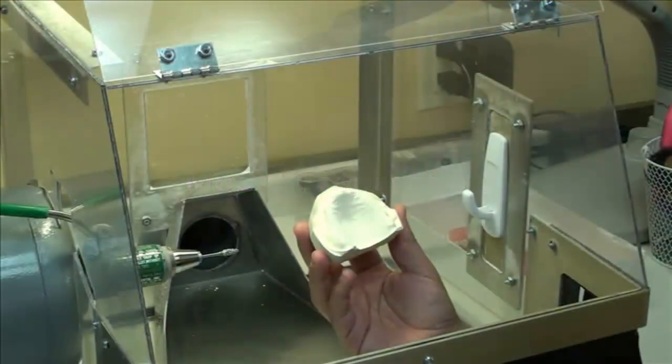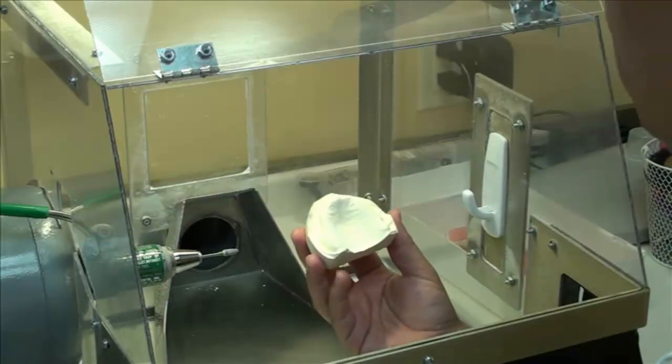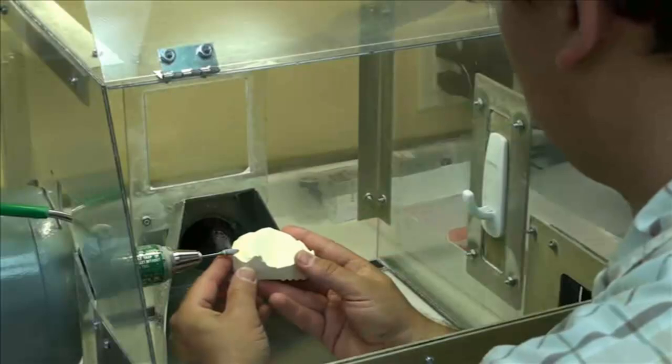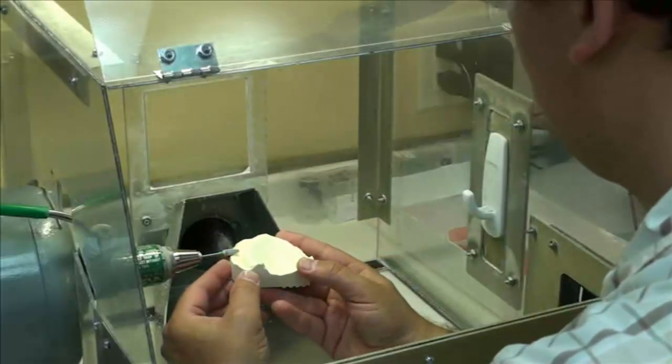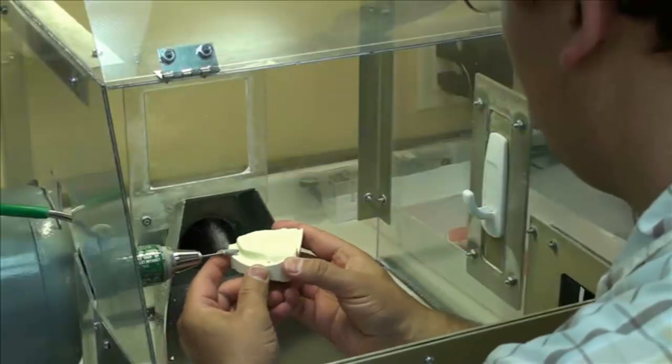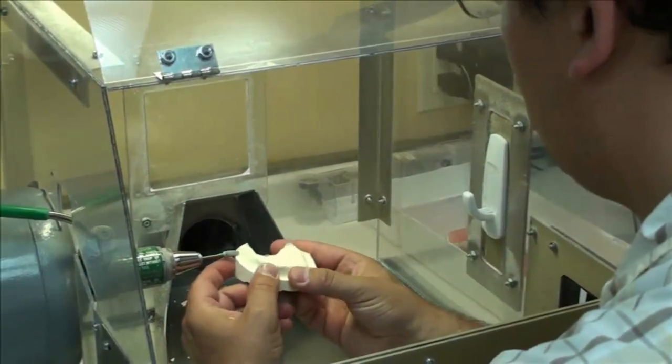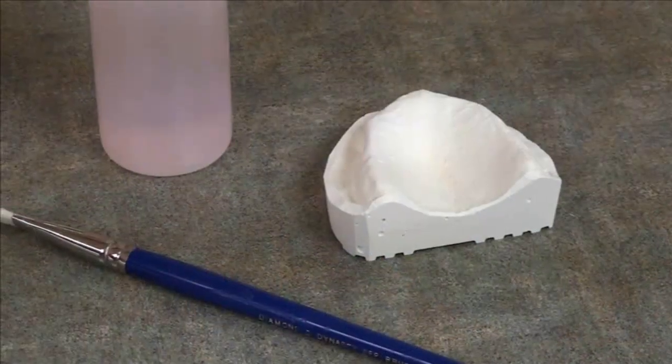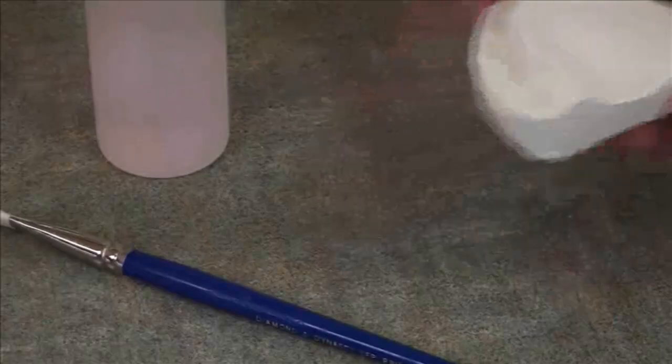Let's begin the review of the FiberForce mesh fabrication process with a look at model preparation. Trim the final working model to ensure all sharp edges are removed. This will be important later when the model is placed inside the splint vac unit. Complete the model preparation by applying a separating liquid and allowing it to dry.